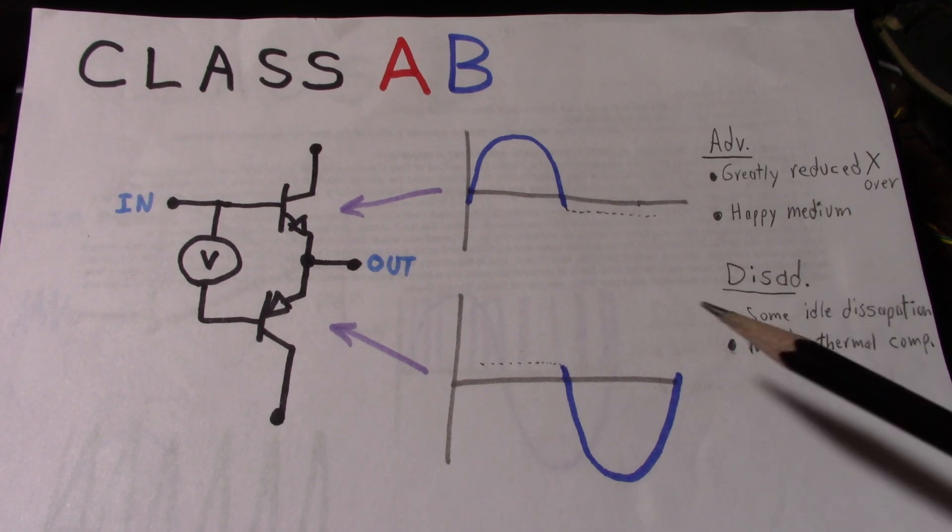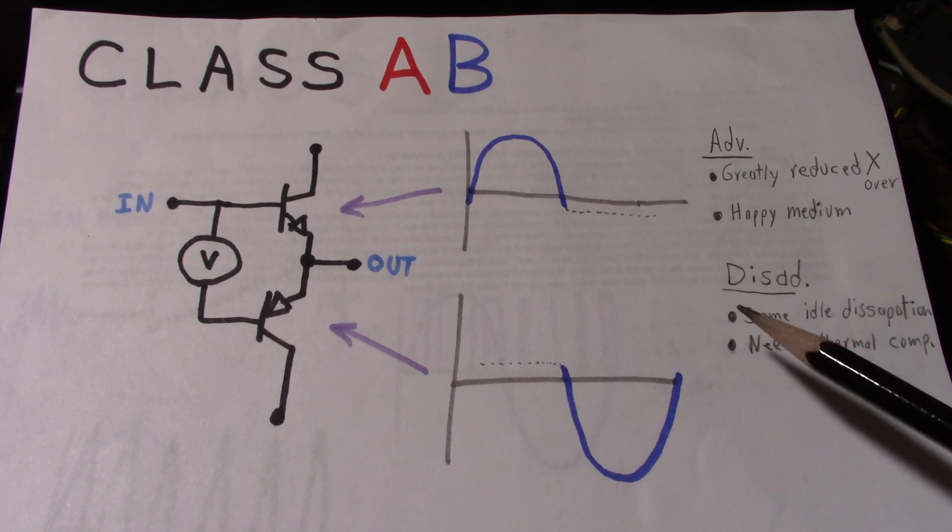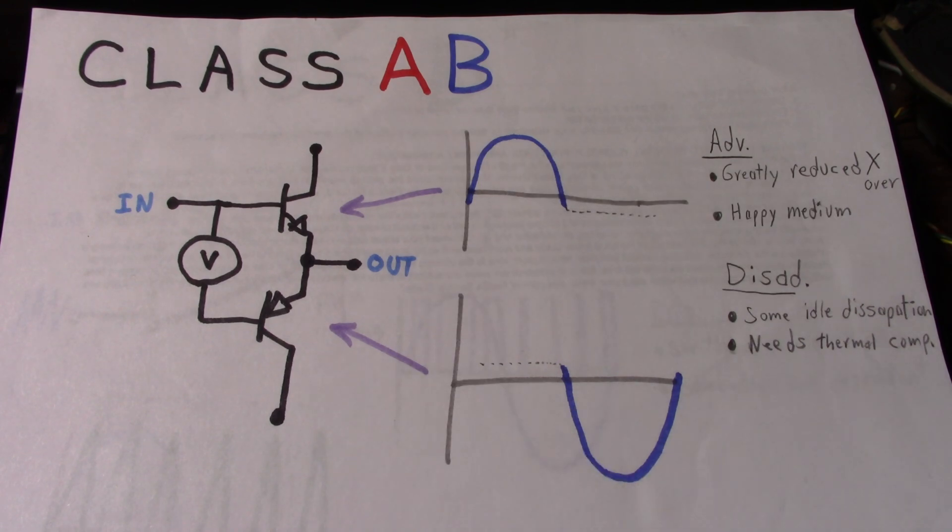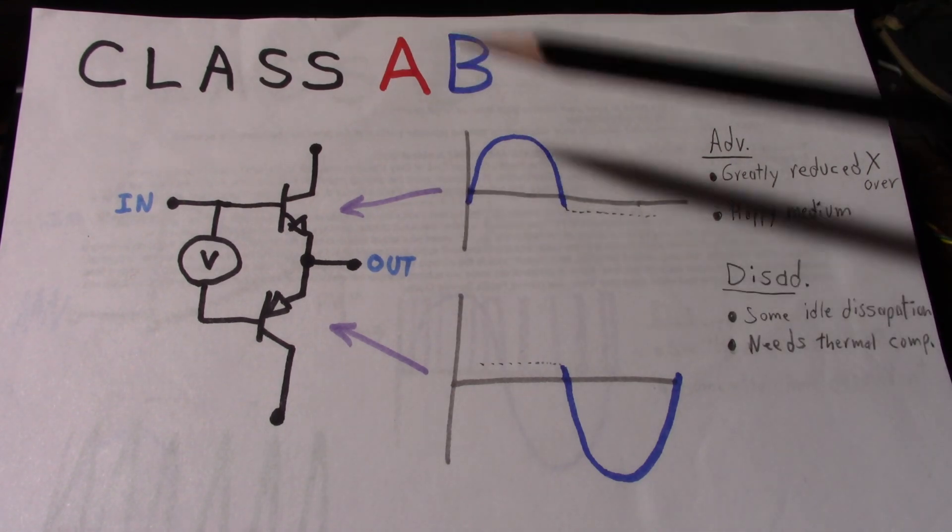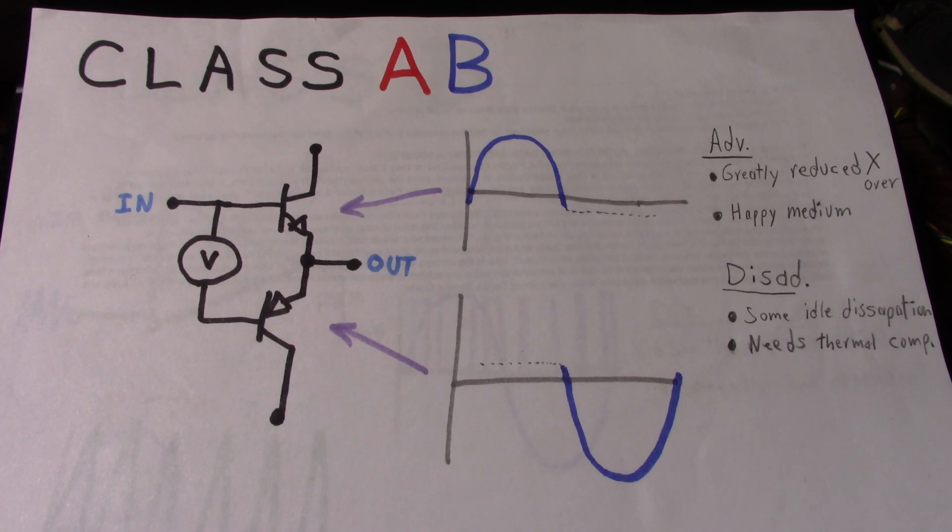So some disadvantages. Well, as I say, even sitting idle there's going to be some dissipation, but it's generally pretty small. It's one reason why back in the 50s, when transistor radios started coming out, they moved to Class AB, because they needed a circuit that wasn't going to use a lot of power. You didn't want to run your batteries down too quickly. Another disadvantage is it needs some sort of thermal compensation.